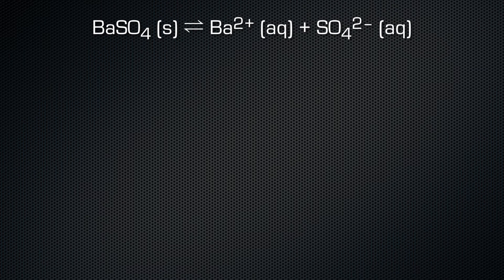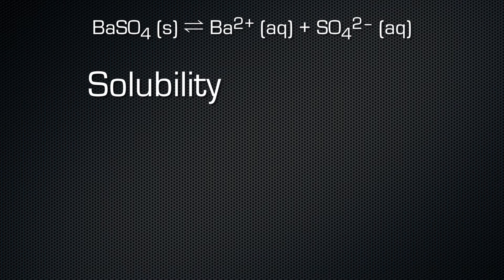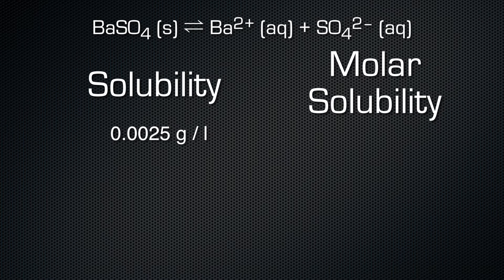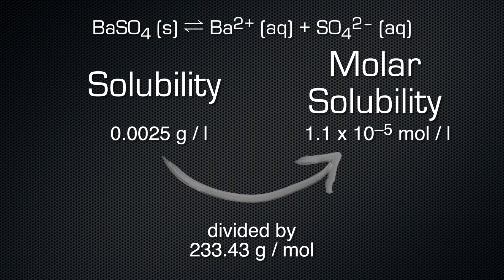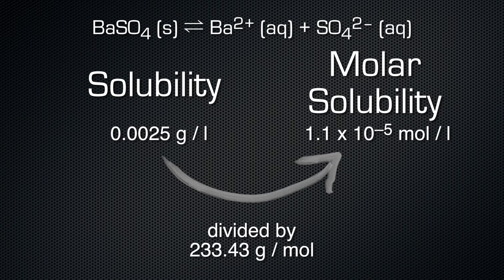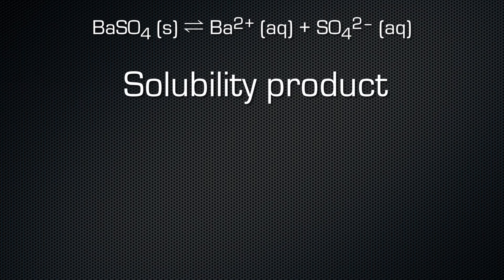There are different terms in the context of the solubility product. The solubility tells you how many grams of a certain compound dissolve in 1 liter of water. For instance, barium sulfate has a very low solubility of 0.0025 grams per liter. Then we have the molar solubility, which shows how many moles can be dissolved in 1 liter. Then we have the solubility product constant, or short, the solubility product.